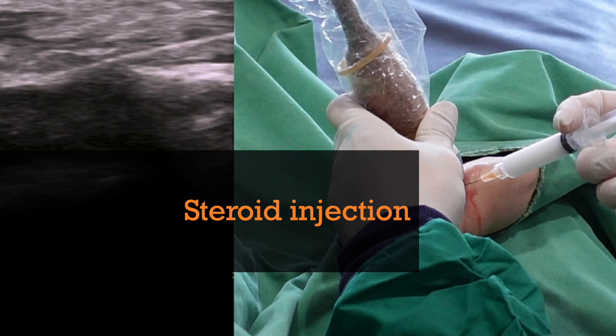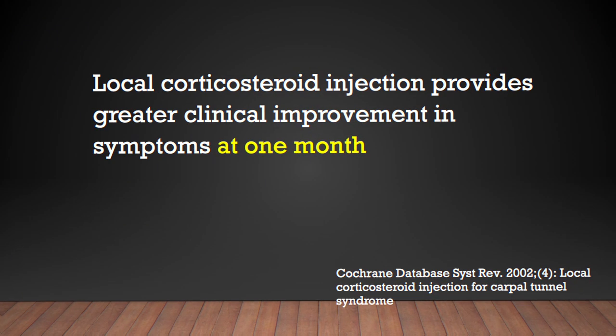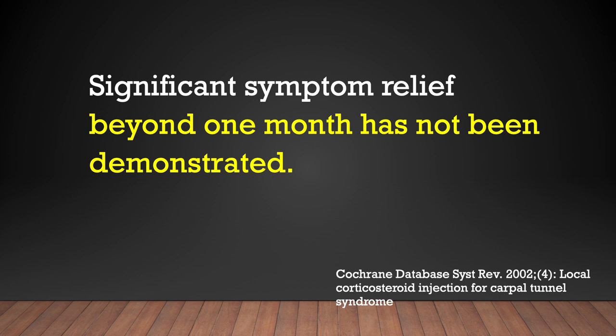Steroid injection is the most commonly used interventional procedure, but its effect is questionable. According to the Cochrane review, local corticosteroid injection for carpal tunnel syndrome provides greater clinical improvement in symptoms at only one month after injection. Significant symptom relief beyond one month has not been demonstrated.